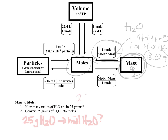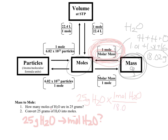Setting up the problem: I have 25 grams of H2O. I put one mole of H2O on top, and 18.02 grams of H2O on the bottom. The grams of H2O in the numerator and denominator cancel out, leaving only units of moles of H2O.